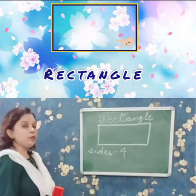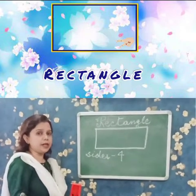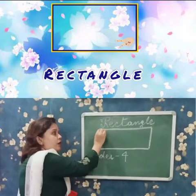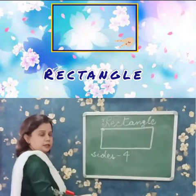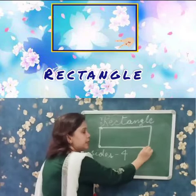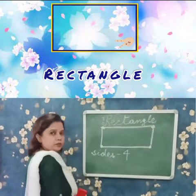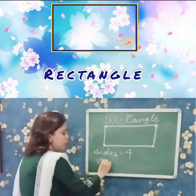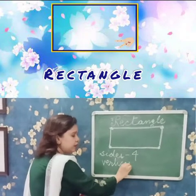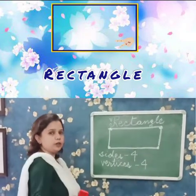How many vertices? Now what do you mean by a vertex? These corners are the vertices. So how many corners in a rectangle? Four corners. Four vertices.